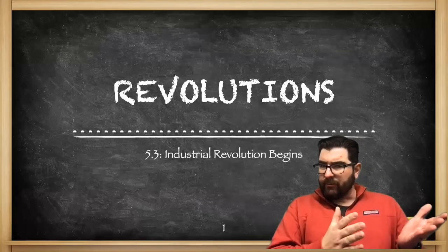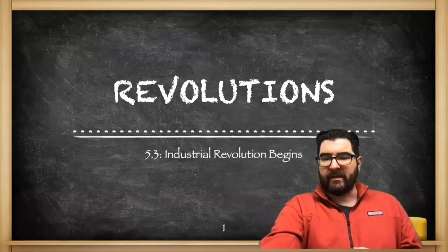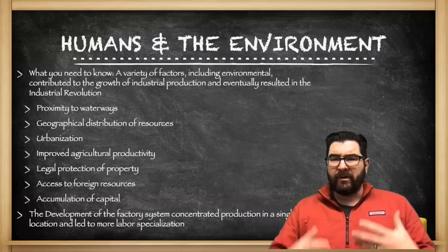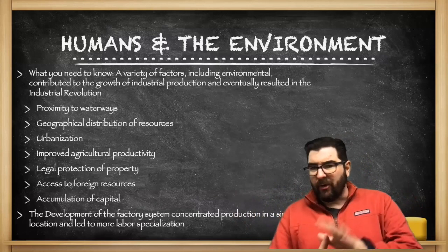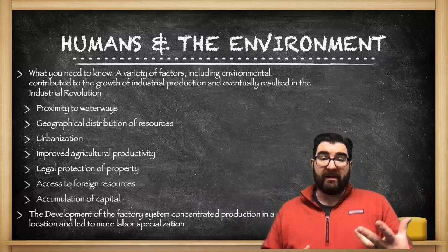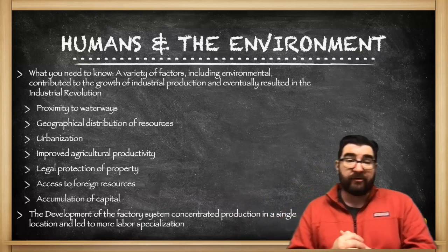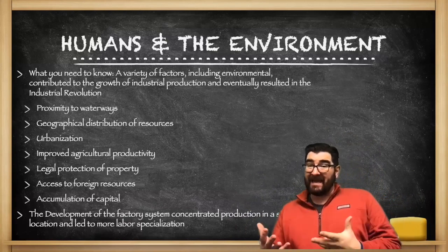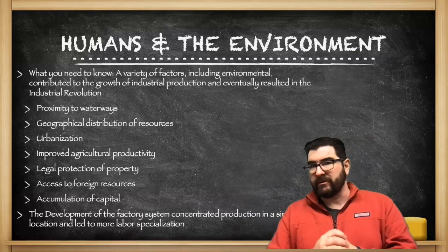We got past the political revolutions, and now we're going to move on into the Industrial Revolution, but we need to talk about where it comes from. A variety of factors, including environmental, will contribute to the growth of industrial production during the 18th and 19th century that we call the Industrial Revolution.